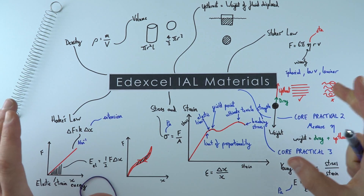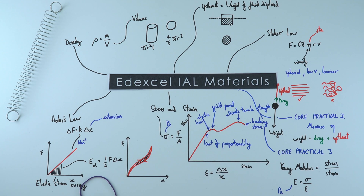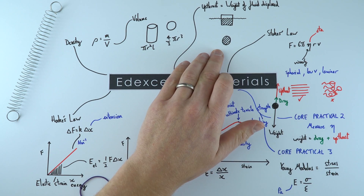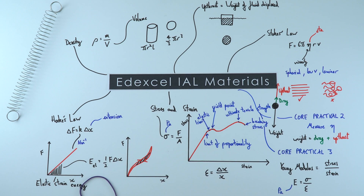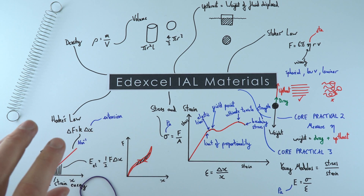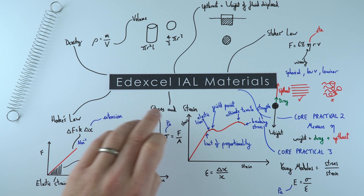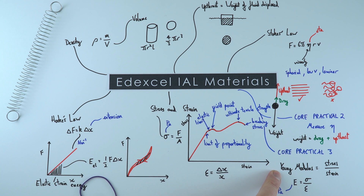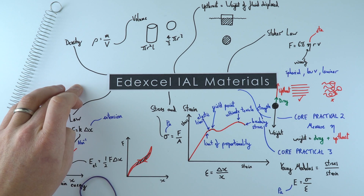That is a brief summary of the materials module for Edexcel IAL. We covered density, what happens in liquids and fluids, upthrust and Stokes' law for falling objects, Hooke's law for springs and other materials, and then stress and strain as properties of a material, leading to how to calculate the Young modulus. That is Edexcel IAL materials.